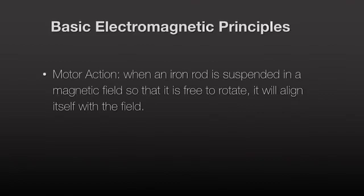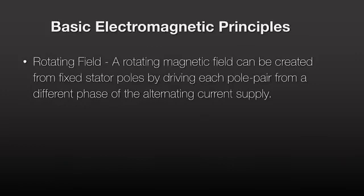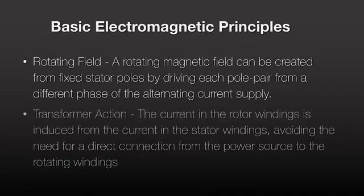You can create a rotating magnetic field from fixed stator poles by driving each pole pair from a different phase of the alternating current supply. With three-phase AC power, you create a three-phase AC motor.